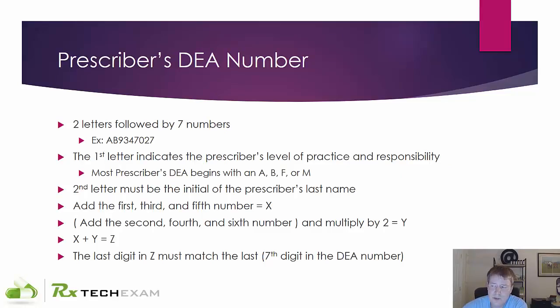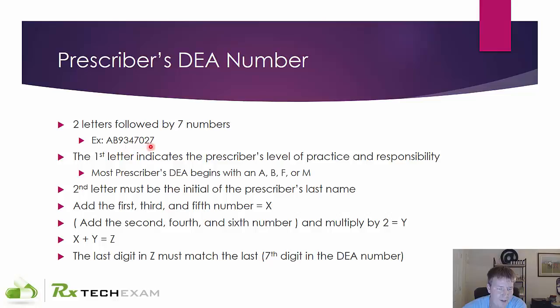DEA numbers are ultimately two letters followed by seven numbers. As you can see here, an example would be AB9347027 — two letters followed by seven numbers.